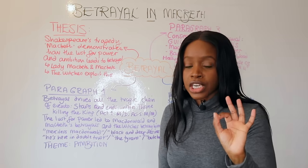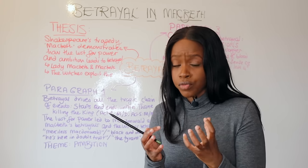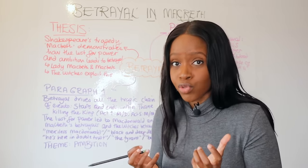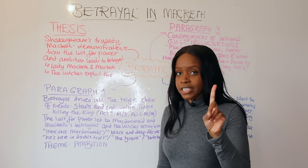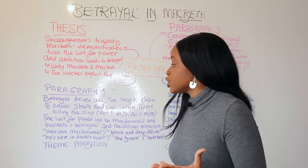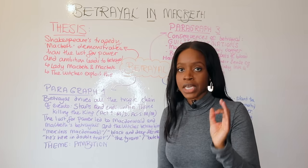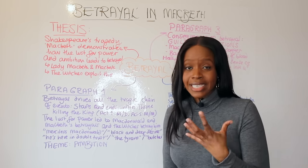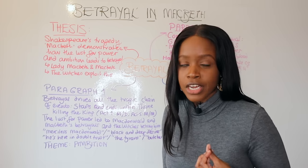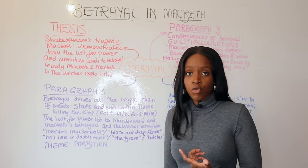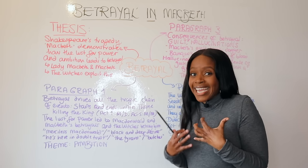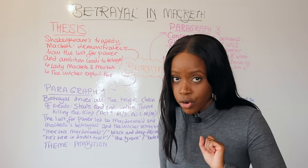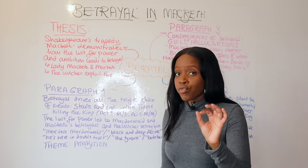These are the quotations you need to frame the idea that betrayal drives the tragic chain of events. The first quotation highlights the first Thane of Cawdor — the captain in act one scene two describes 'this merciless Macdonwald,' driven by ambition for power. Equally, the witches tell Macbeth 'hail Macbeth, that shalt be king hereafter,' and once one prophecy comes true, he recognises his hidden lust for power, describing his 'black and deep desires.'